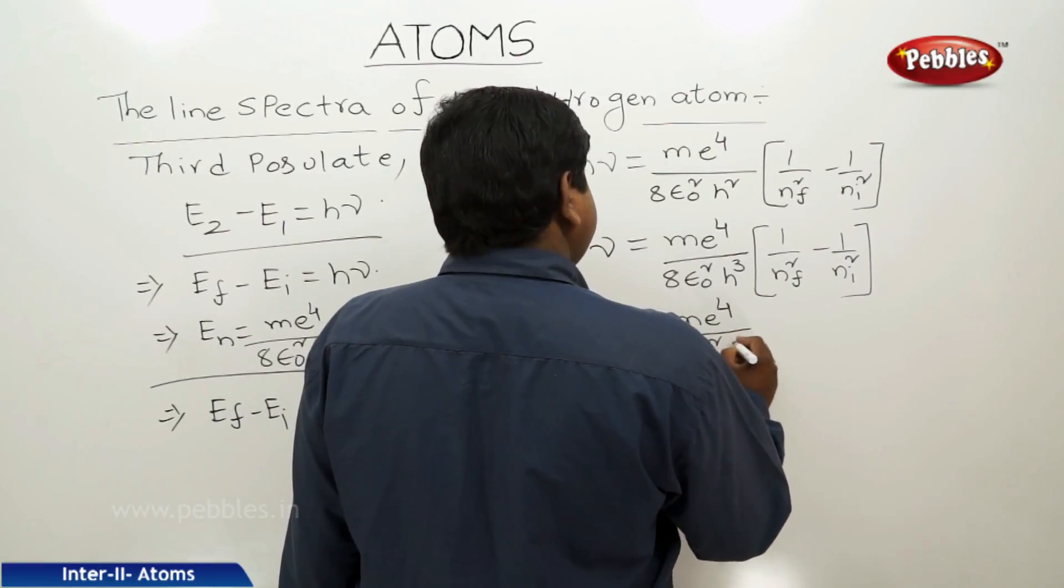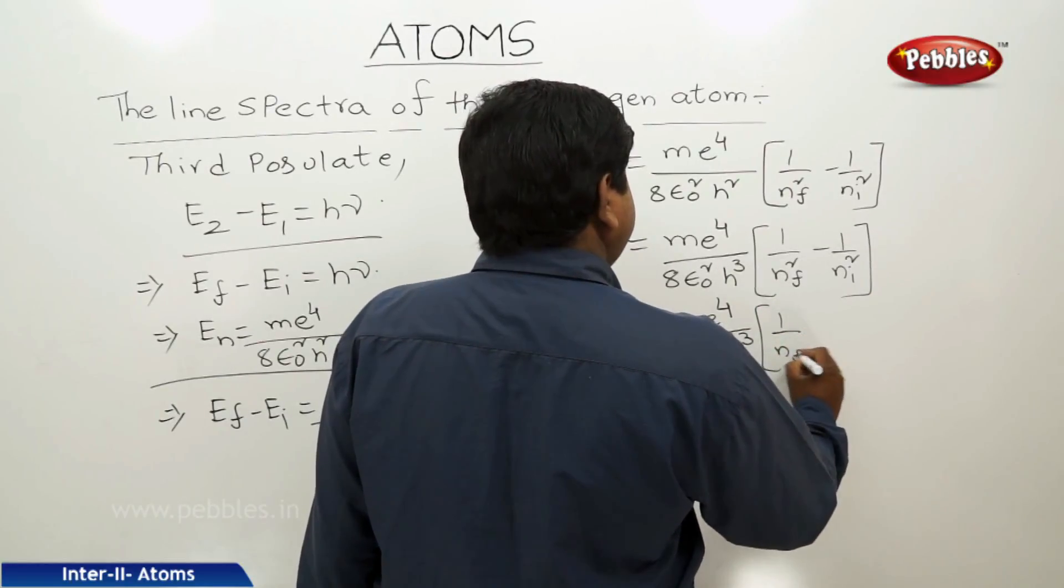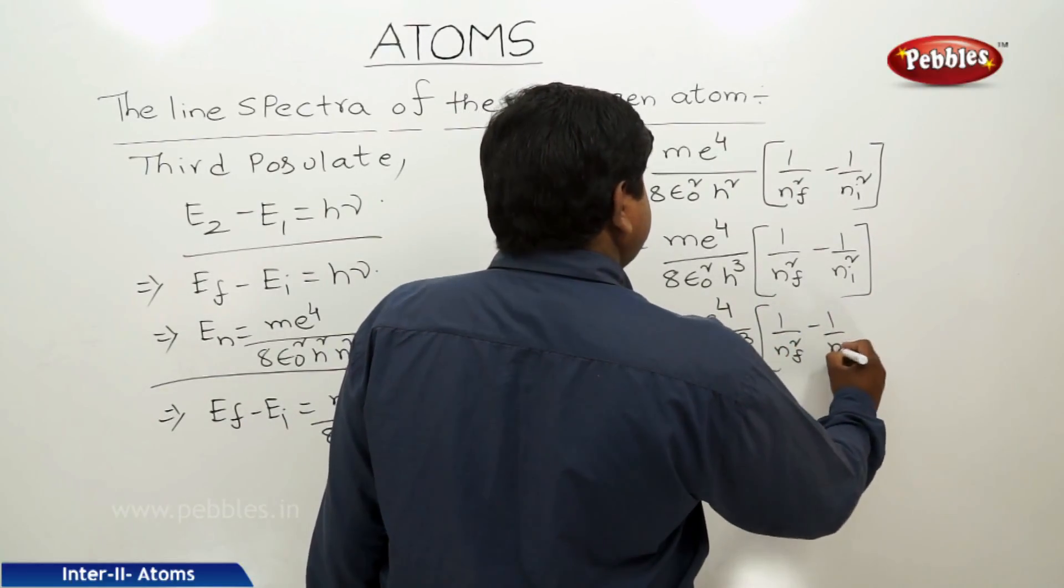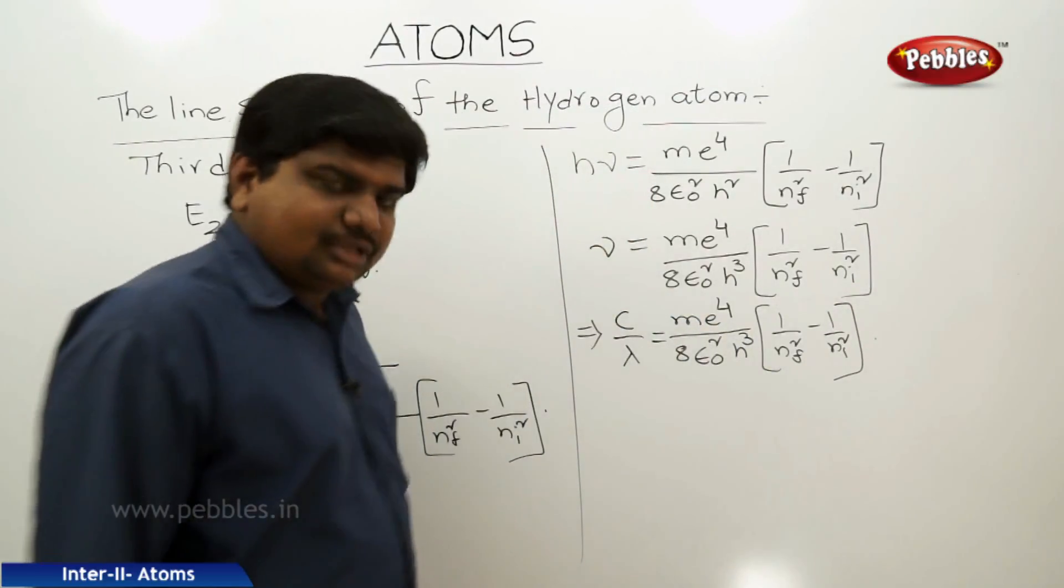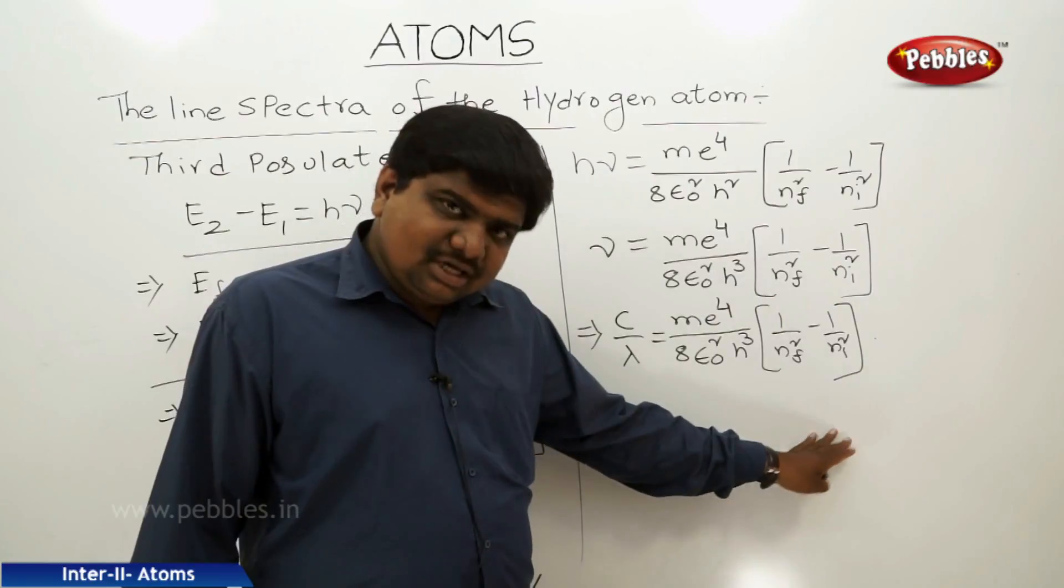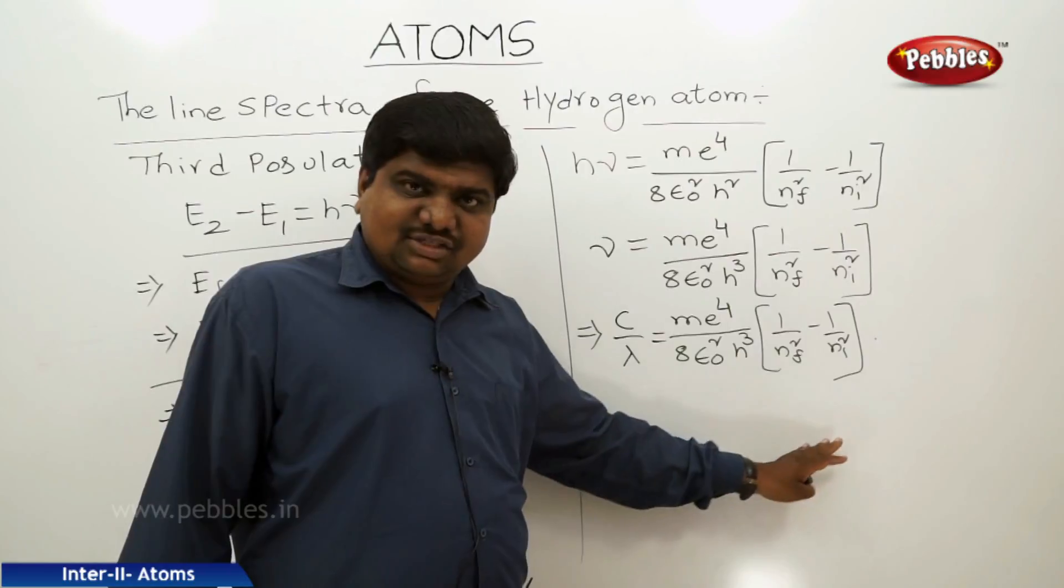This formula is similar to 1 by lambda equals R into 1 by nf squared minus 1 by ni squared.